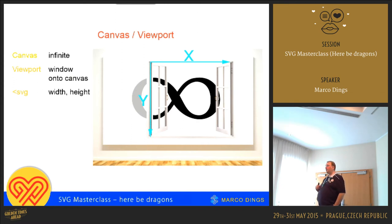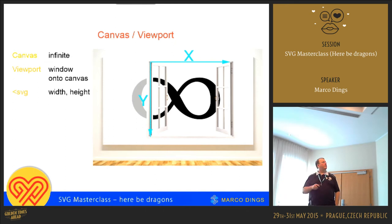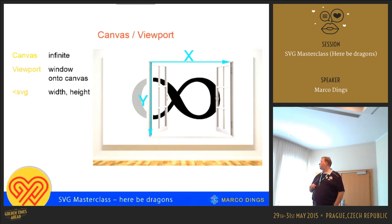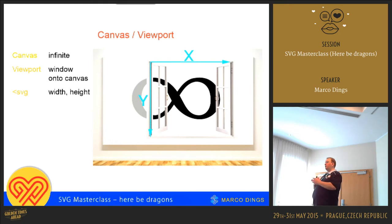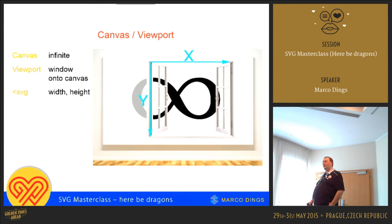The first part to wrap your head around is the canvas, viewport and SVG. The first thing to understand is how does an SVG actually display. It is very powerful. If you just do an image and don't worry about anything, that's okay. But you can do really powerful things if you wrap your head around the concepts of the canvas and the viewport.